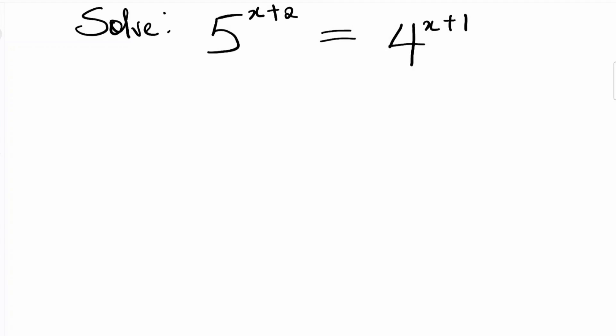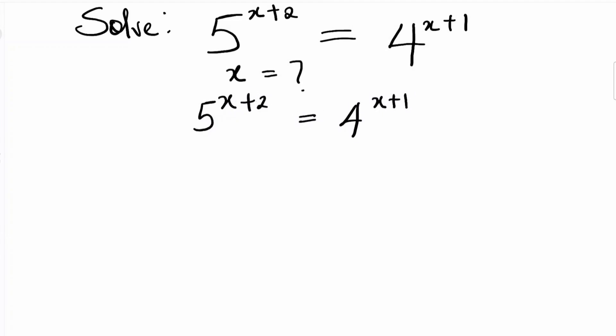So we have a function 5^(x+2) is equal to 4^(x+1). Our goal here is to find x. So when we have 5^(x+2) is equal to 4^(x+1).